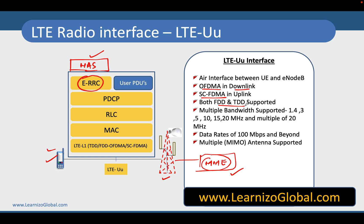LTE supports scalable bandwidths in the range of 1.4 MHz, 3 MHz, 5 MHz, 10 MHz, 15 MHz, 20 MHz, and multiples of 20 MHz. The LTE-Uu interface can provide data rates up to 100 Mbps and beyond. Using MIMO (Multiple Input Multiple Output) antennas, speeds can reach up to 300 Mbps in LTE Release 8 and up to 1.5 Gbps in Release 10.